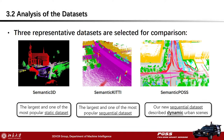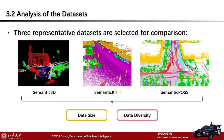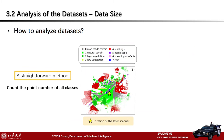We selected three representative datasets for analysis and comparison: Semantic3D, the largest and most popular static dataset; Semantic KITTI, the largest and most popular sequential dataset; and the new Semantic POS dataset, which describes dynamic urban scenes. We will analyze them from aspects of data size and data diversity. A straightforward method for analyzing 3D LiDAR data size is to count the point number and proportion of each class.